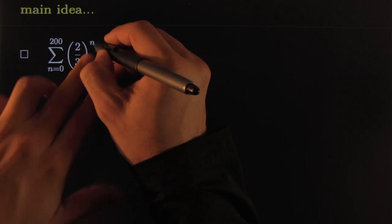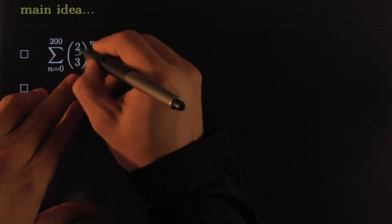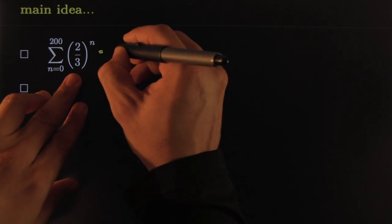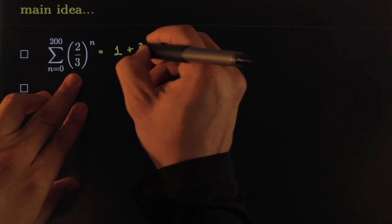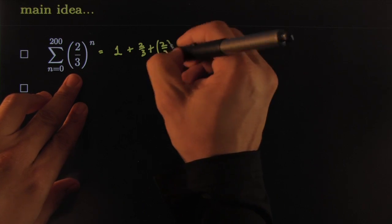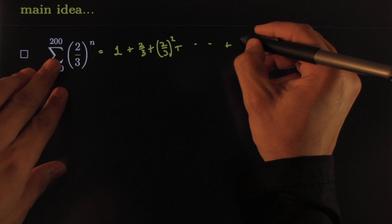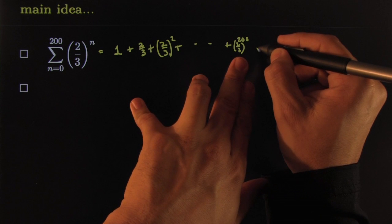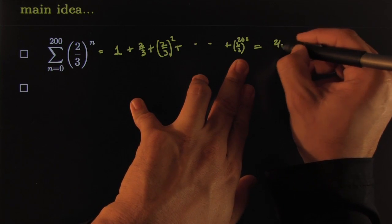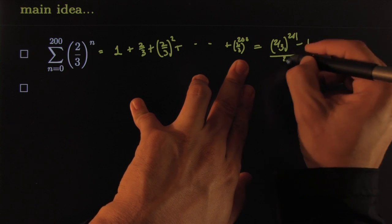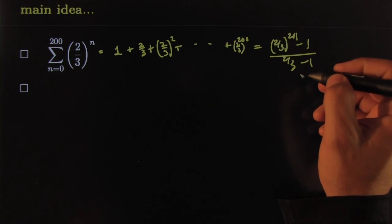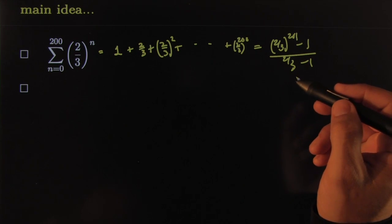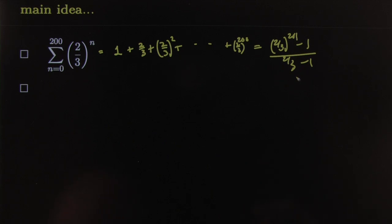This is the different powers of two-thirds. If you write it out, the zeroth power is one, the next is two-thirds, then two-thirds squared, all the way up to two-thirds to the 200th power. That's a famous geometric sum. We know how to add it: it's two-thirds raised to the 201st minus one, all over two-thirds minus one — a super famous geometric series.